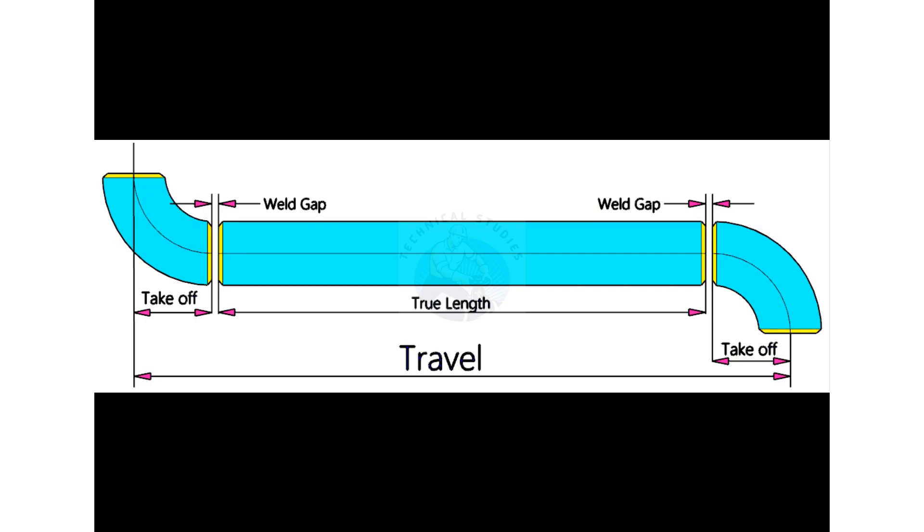So, how will we calculate the true length of the spool? The true length or cut length is: add 2 welding gaps and 2 take offs, then minus this sum from the travel.